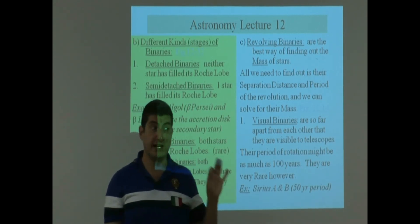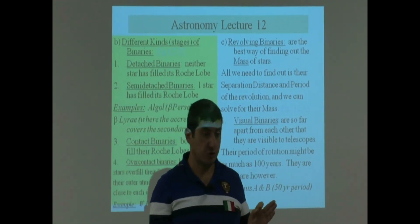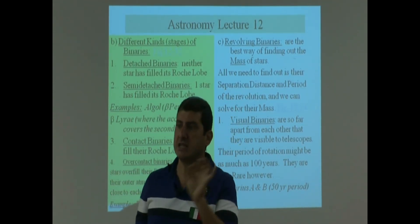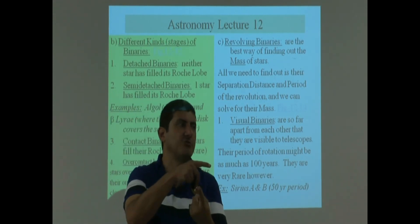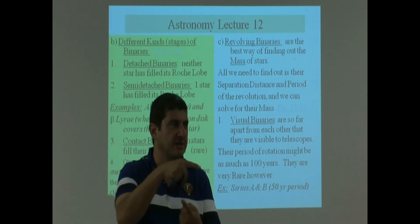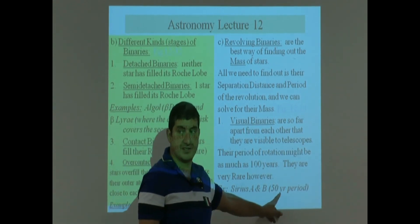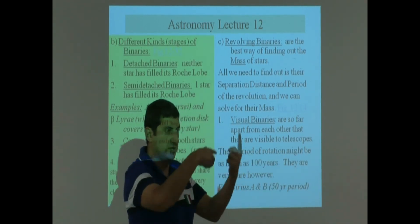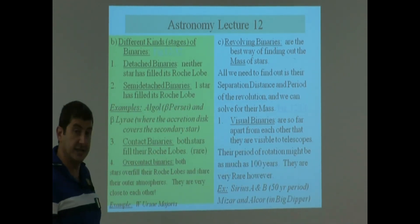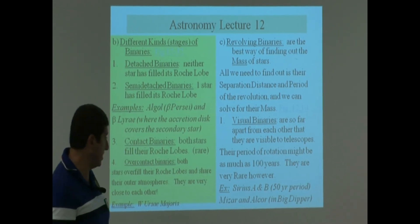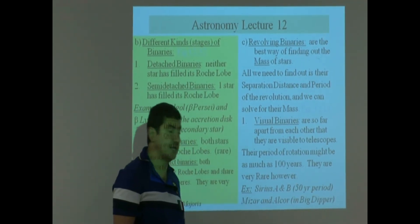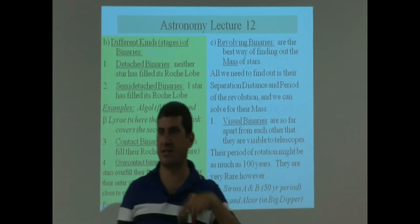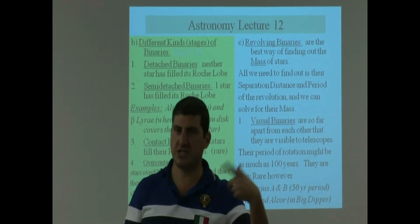If you do buy a telescope, you can look through it and see Sirius A, and next to it you will see Sirius B, and they're revolving around each other. But it takes them 50 years to revolve around each other once, so it takes a whole lifetime to study their revolution. Another good example that is easy to study is Mizar and Alcor, found in the Big Dipper. They're also a visual binary pair — you can buy a telescope, study them, and see them going around each other.